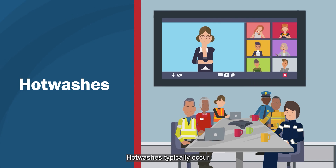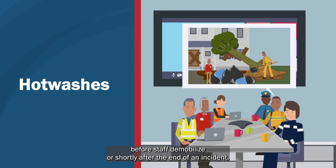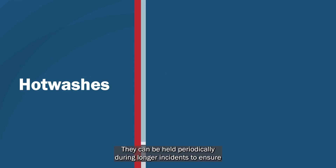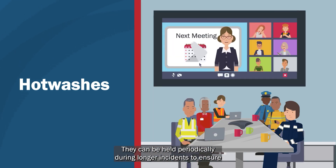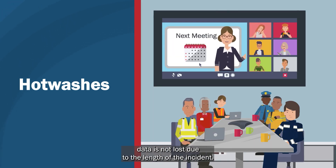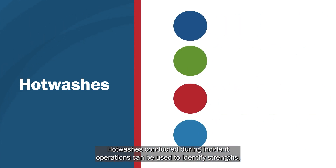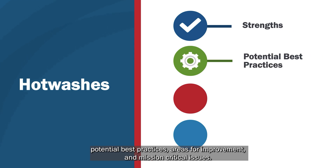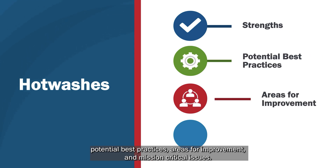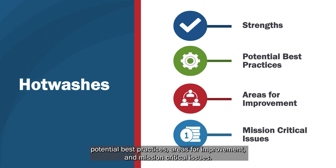Hot washes are facilitated group discussions used to gather feedback during or following an incident. Hot washes typically occur before staff demobilize or shortly after the end of an incident. They can be held periodically during longer incidents to ensure data is not lost. Hot washes conducted during incident operations can be used to identify strengths, potential best practices, areas for improvement, and mission-critical issues.